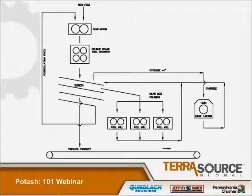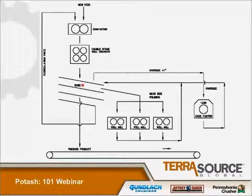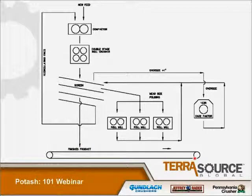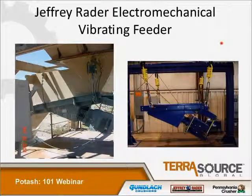This is a typical simple sketch of how the equipment can be put in a compaction circuit. The compactor compacts the fine material. Under the compactor, you have a four-roll crusher sizing the flake. After it's sized, it goes to the screen decks. The coarser oversize can go to a cage mill, and the near-size can go to roll mills. The finished product is separated out, and anything finer goes back to the compactor. The Jeffrey Rader electromechanical vibrating feeders are also used in these circuits.